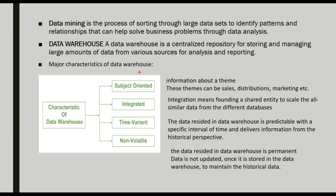A data warehouse is just like a database, but not a traditional database. It has four major characteristics. The first one is subject-oriented. The data we are storing should be subject-oriented — information about a theme. The theme can be sales, distributions, marketing, etc. For example, we might store all the sales data of an online business venture like Amazon or Flipkart.